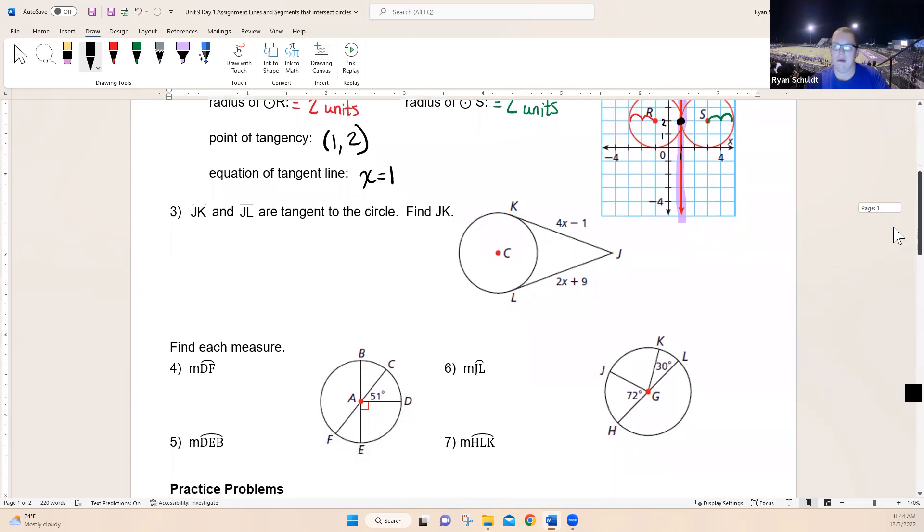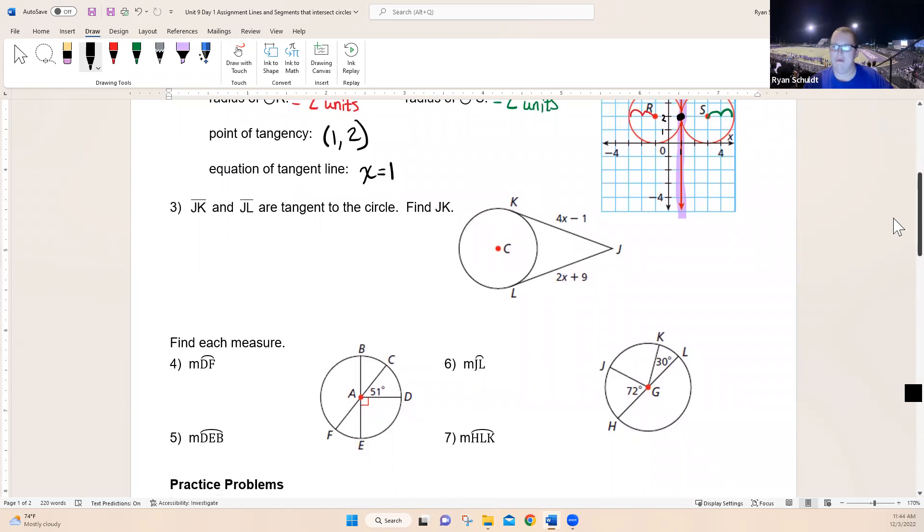Number three: JK and JL are tangent to the circle. Find JK. Notice these both start at point J, so that means these are equal. Four x minus one equals two x plus nine. Move our 2x over, that gives us 2x minus one equals nine. Add one, 2x equals ten. Divide by two, and we get x equals five. Are we done?